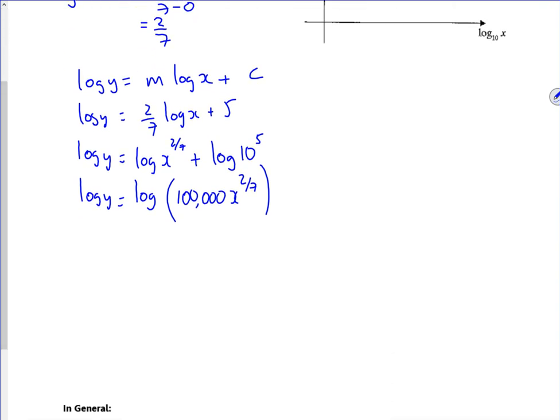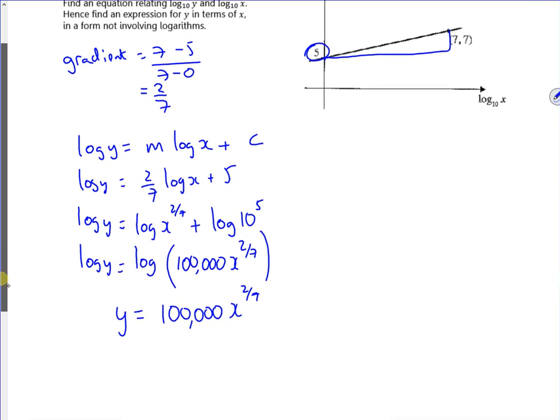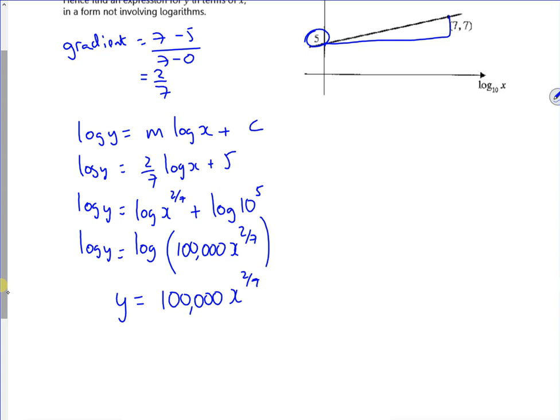So it's going to be 10 to the power of 5. So that means, if I get rid of the logs, that y equals 100,000 x to the power of 2 over 7. That's a bit random. I mean, I kind of just did it without actually reading the question, but it wanted the equation.